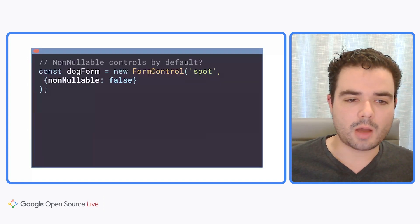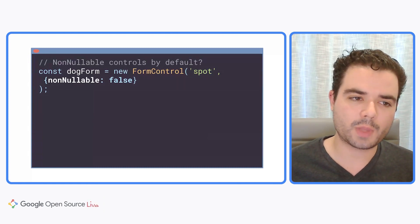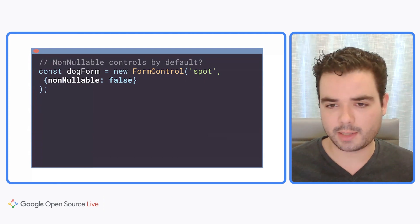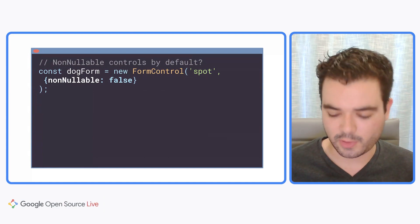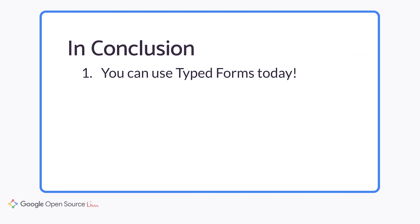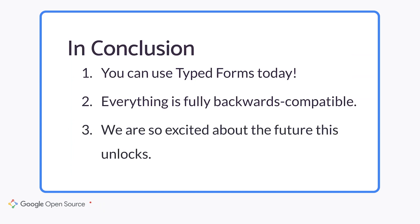Another area we'd like to work on is non-nullable controls by default. This is currently somewhat verbose to express, and although we do have the formBuilder.nonNullable shorthand, it would be better if this were the default in all cases. So in the future, we'll be working towards flipping this flag. In conclusion, typed forms are available today as of Angular 14, and you can upgrade to them immediately. Everything is completely backwards compatible — you can upgrade your app incrementally at your own pace, and nothing will break. We are incredibly excited about the future improvements this unlocks. Thank you so much, and go build very safe, very powerful reactive forms applications.